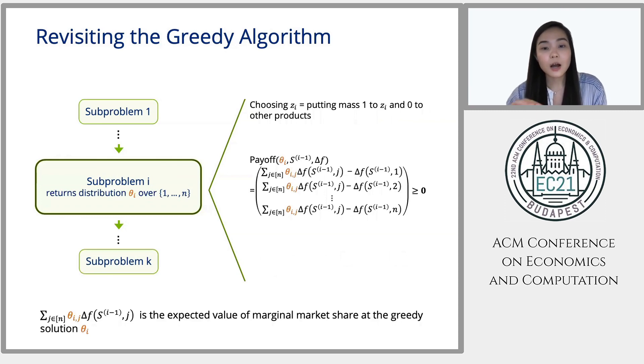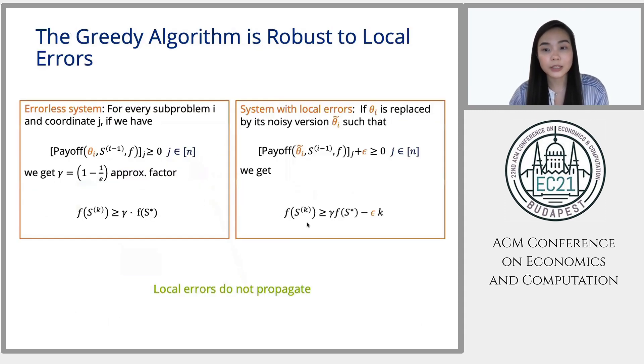This greedy algorithm is also robust to local errors, meaning that replacing the locally optimal decisions with almost locally optimal decisions do not propagate the errors. So as you can see for the errorless system, if we have non-negative payoff at each time, then the final set chosen is a gamma approximation. But for the system with local errors, if theta i is replaced with its noisy version, which is theta i tilde, such that the payoff is always greater than zero plus minus some epsilon error. Then the final set chosen would be at least gamma times optimal minus epsilon times k, where k is the number of sub-problems. So not all greedy algorithms are robust.